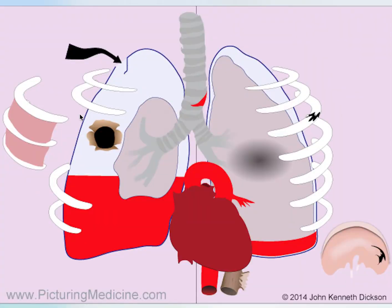On this side, we have a tension pneumothorax causing collapse of the lung and compression in this direction. We also have an open pneumothorax, a flail segment, and a massive haemothorax.